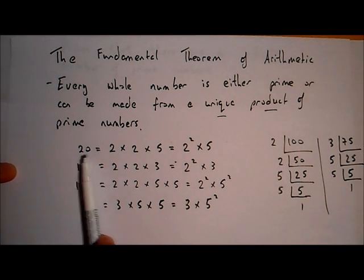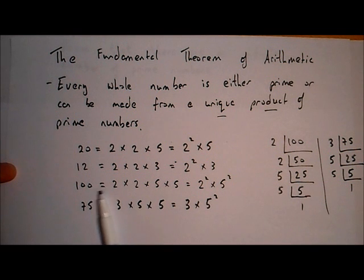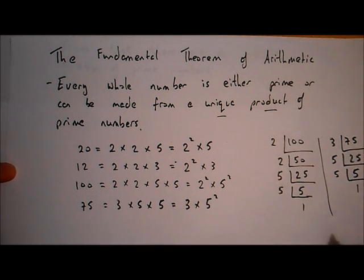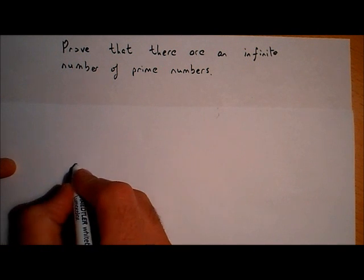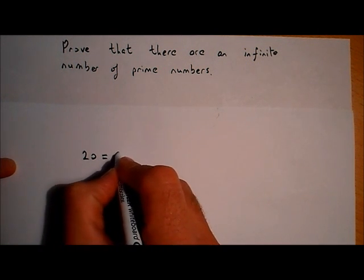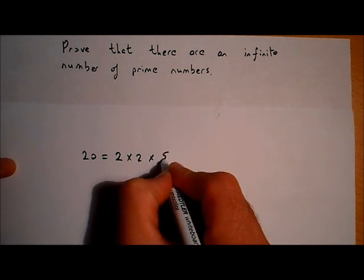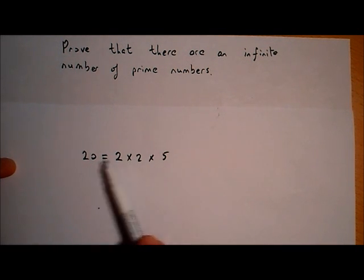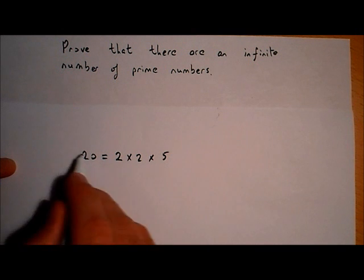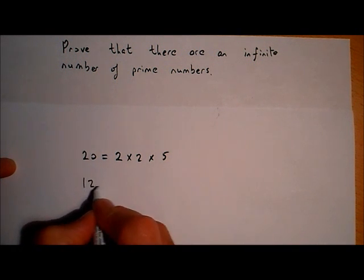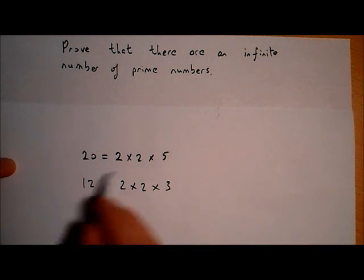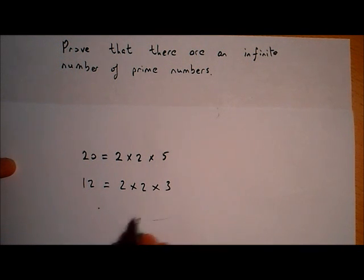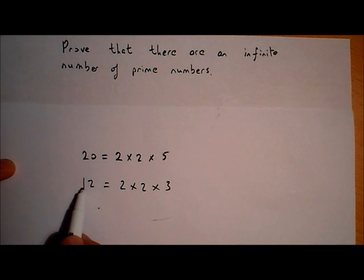So if we take the number 20, 20 is equal to 2 by 2 by 5. And 12 is 2 by 2 by 3. We can make up any number that's not a prime number by multiplying prime numbers together. That means that 2 is a factor of 20 and 5 is a factor of 20. And for 12, which is 2 by 2 by 3 — that's the prime factorization — 2 is a factor of 12 and the prime number 3 is a factor of 12.